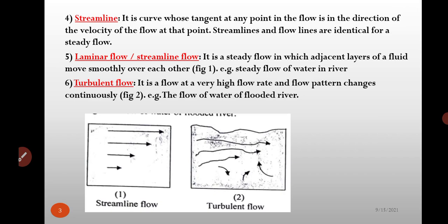Next, stream line. It is a curve whose tangent at any point in the flow is in the direction of the velocity of the flow at that point. Stream lines and flow lines are identical for a steady flow.